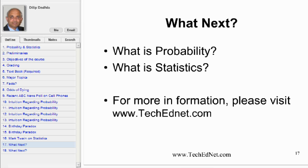Probability is used to describe events that do not occur with certainty. People in varied occupations use statistics. Health professionals use statistical methods to determine whether a specific drug or procedure is useful in the treatment of medical problems. Weather forecasters use statistics to more accurately predict the weather. Engineers use statistics to benchmark standards for product safety and quality. Scientists employ statistical methods to design effective experiments. Economists apply statistical techniques in predicting future economic trends.